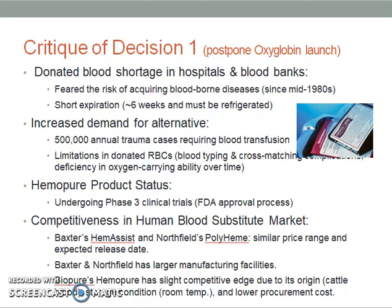For critique of Decision 1, which involves postponing the Oxyglobin launch, there was a donated blood shortage in hospitals and blood banks at the time because people feared the risk of acquiring blood-borne diseases since the mid-1980s. Donated blood also had short expiration dates of up to a maximum of six weeks and required refrigeration. There were also increased demands for alternative solutions because there were approximately 500,000 annual trauma cases requiring blood transfusion at the time.